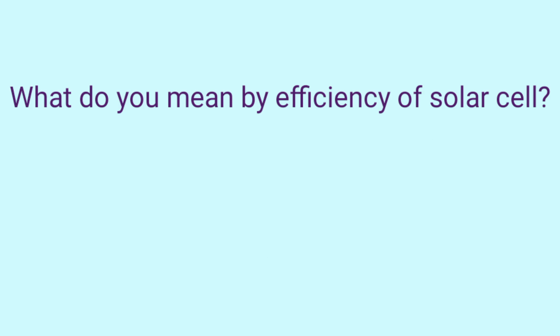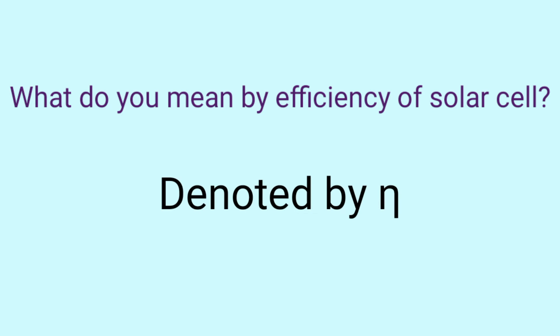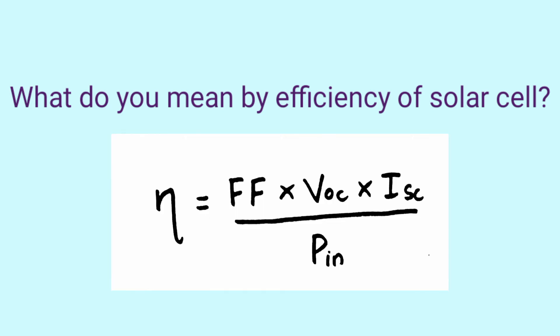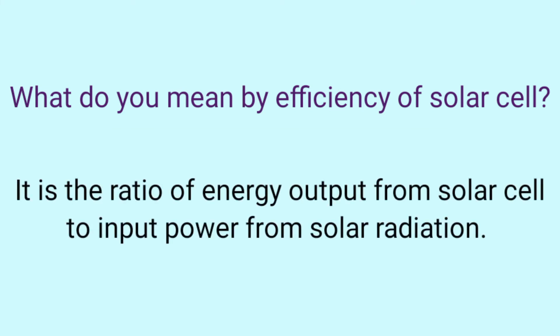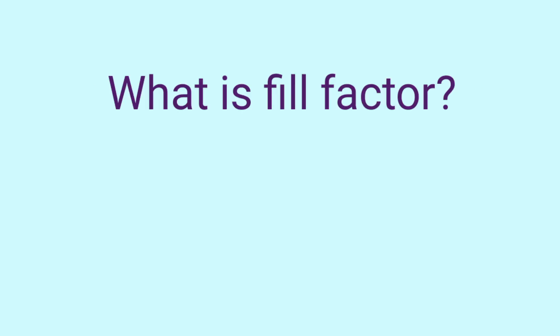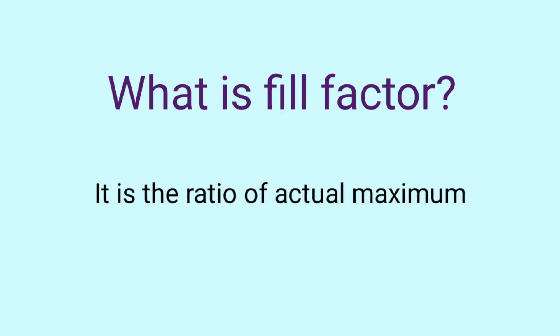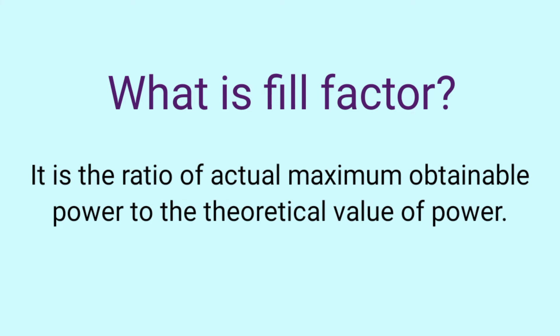What do you mean by the efficiency of solar cell? Efficiency is denoted by eta, and it is the ratio of energy output from the solar cell to the input power from solar radiation. What is fill factor? The fill factor is denoted as FF and it is the ratio of actual maximum power obtainable to the theoretical value of power.